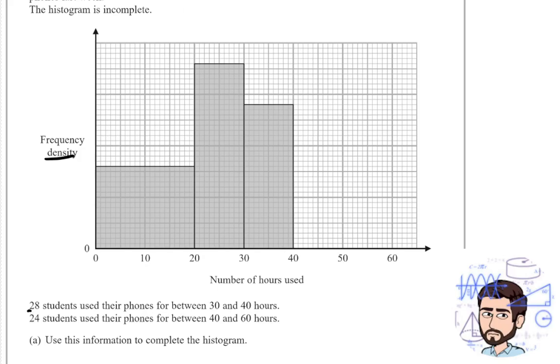If the area of the bar is the frequency, and we are told 28 students use their phone between 30 and 40 hours, that must mean that the area of this bar between 30 and 40 must be 28 because that's the frequency. The width must be 10 because it's between 30 and 40, so the height must be 2.8 because 2.8 times 10 is 28. So the height of this bar is 2.8.